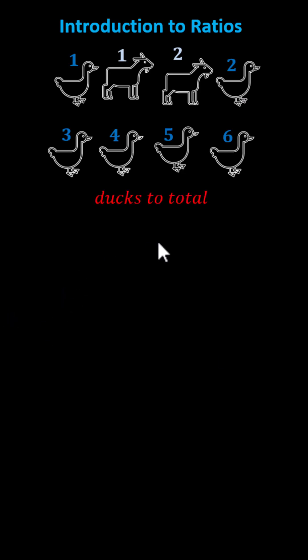We know there are six ducks and there are a total of eight animals, and therefore the ratio of ducks to total is six to eight.